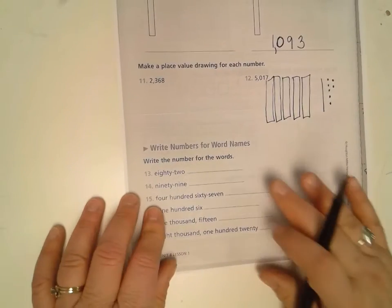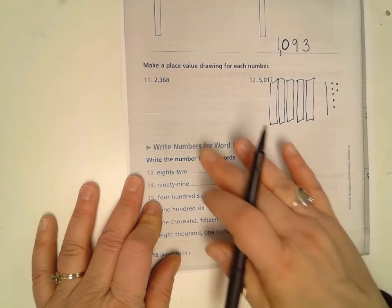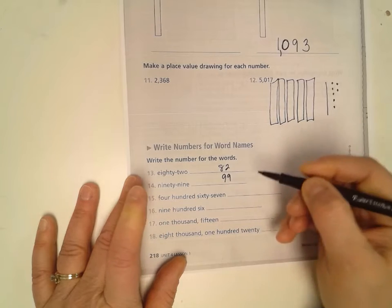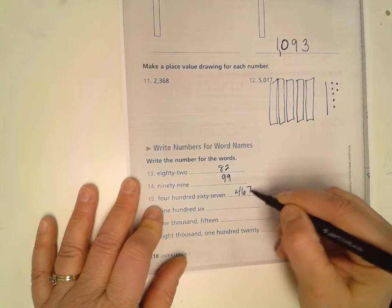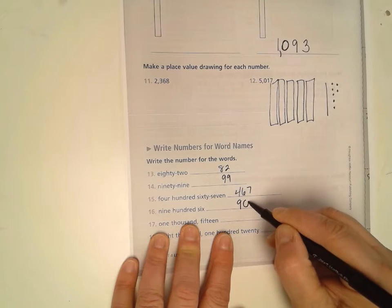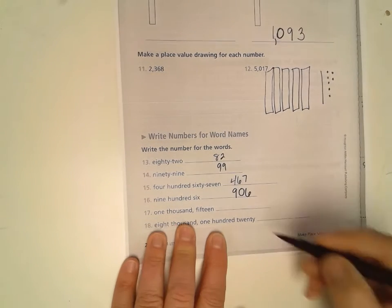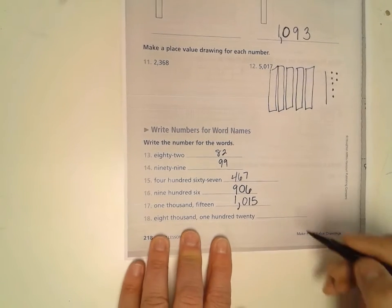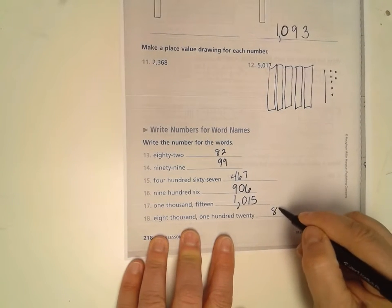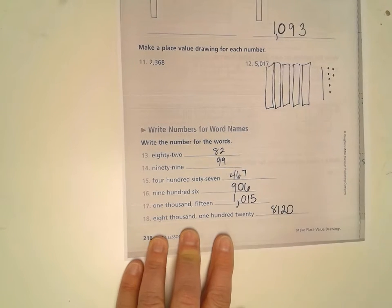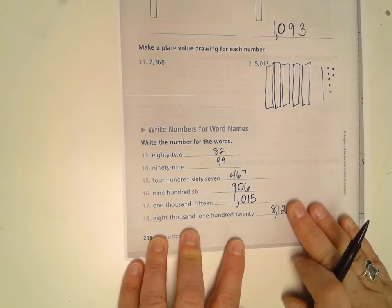And then we had you write the word names for numbers. So we had 82, we had 99, we had 467, 906. So there's that 900 and then there's no tens, so we have to put that zero there. Same thing here, 1015 with no hundreds, so there's a zero. And then 8120. But without that zero for the ones then we would not have the correct number. We'd only have 812. We know that's incorrect.